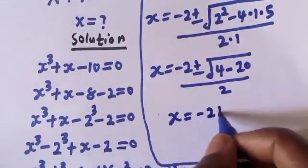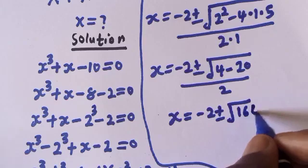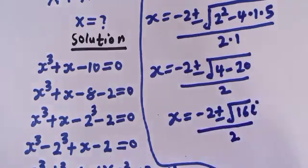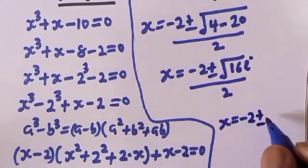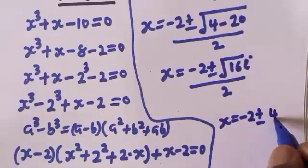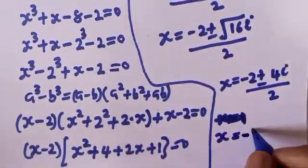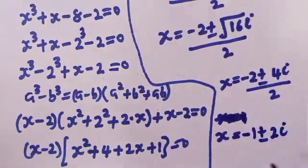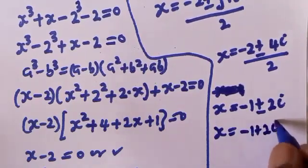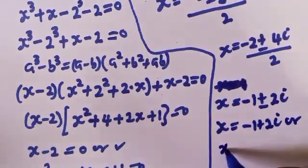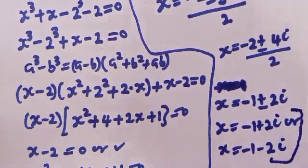S is equal to minus 2 plus or minus square root of negative 16, over 2. Then s is equal to minus 2 plus or minus 4i, over 2. So s is equal to minus 1 plus 2i or s is equal to minus 1 minus 2i. But these two are complex solutions.